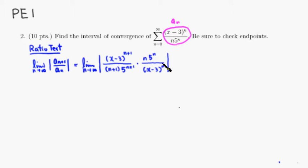Then we can do some cancellations. We can cancel (x minus 3) to the n — there are n+1 of those, so we just cancel that, leaving one extra (x minus 3) on top. Then we can cancel 5 to the n — there are n+1 of those, so we scratch that out and we have one left. That's about it for the cancellations.